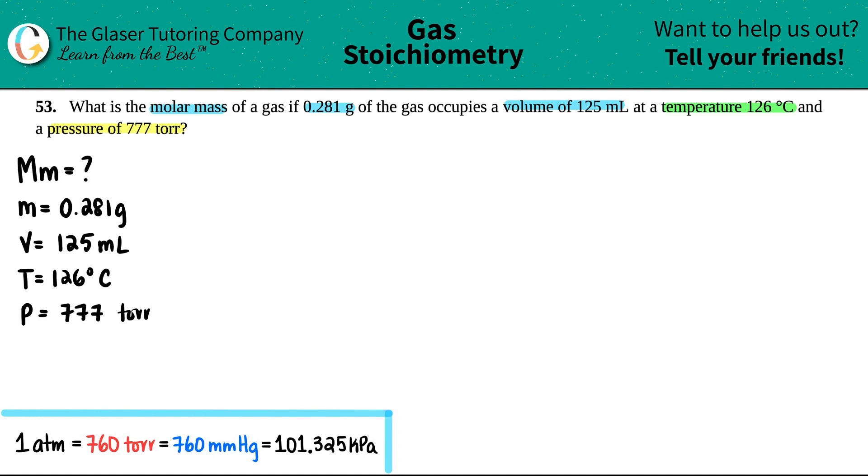Okay, so no sets of units here. I have one single variable for each, right? One volume, one temp, one pressure. So the combined gas law is out.